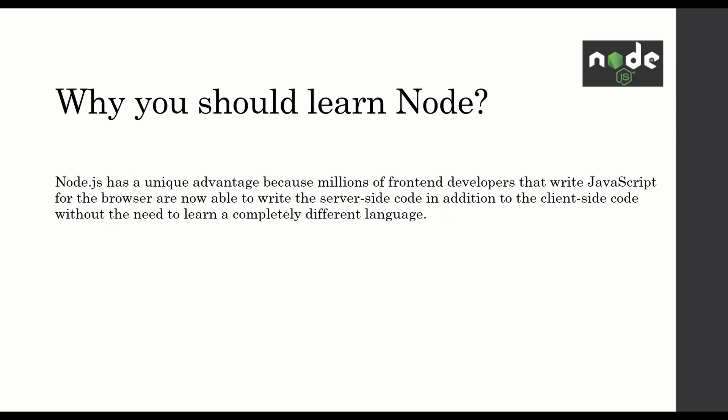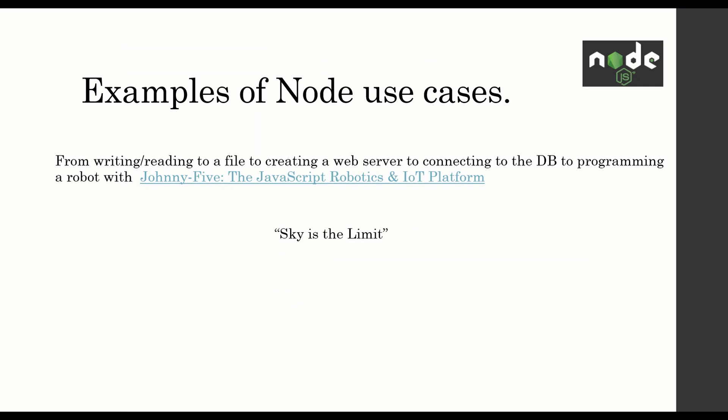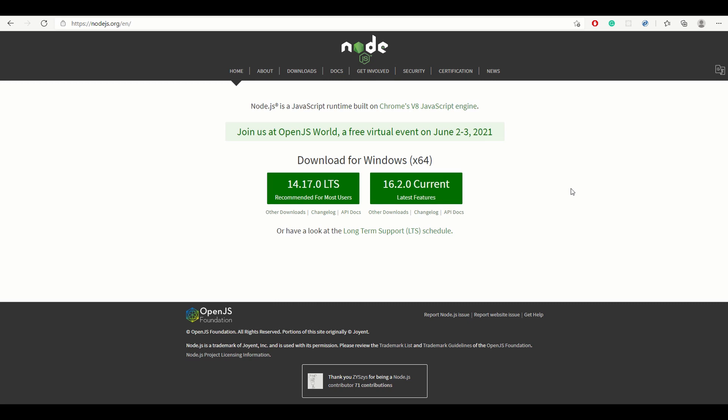Node.js is a very mature platform. A lot of companies use Node.js for enterprise applications and there are tons of jobs available as a Node.js developer. Node can do a ton of stuff — from reading and writing files, to creating a web server, to connecting to a database, to programming a robot with the Johnny-Five IoT platform. The sky is the limit.